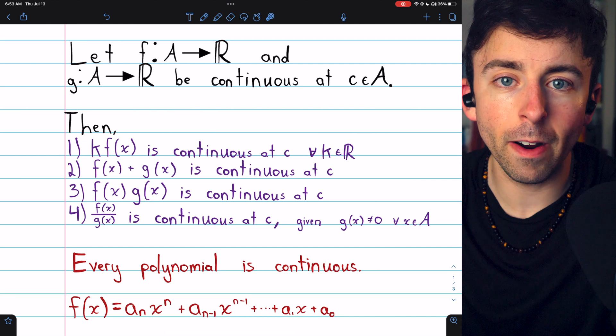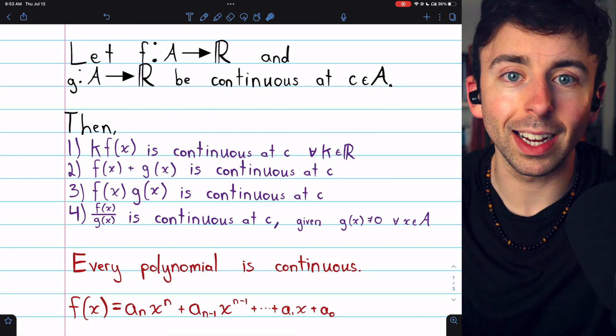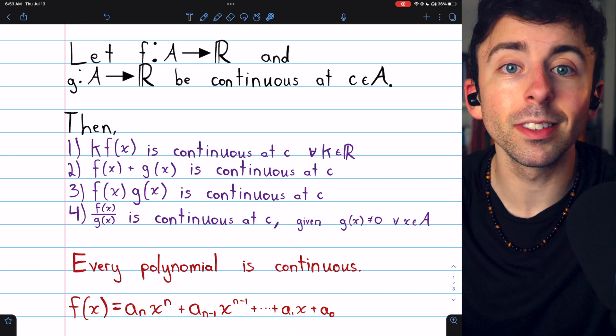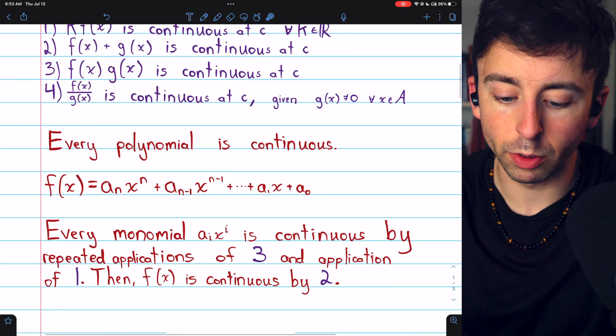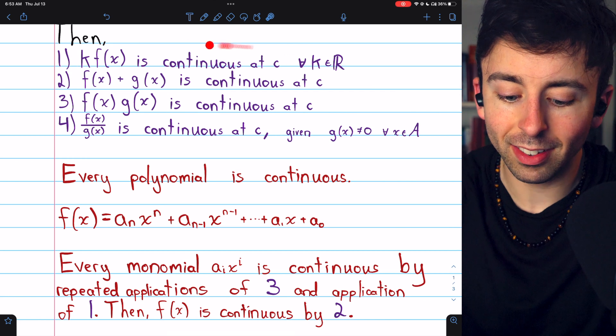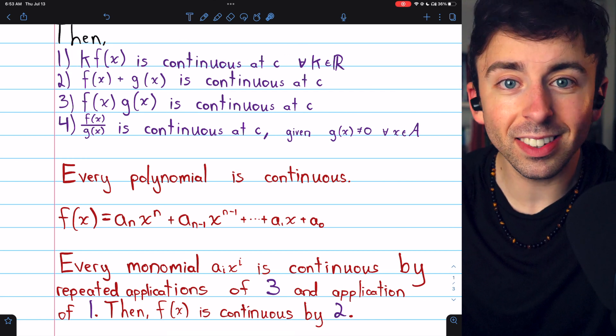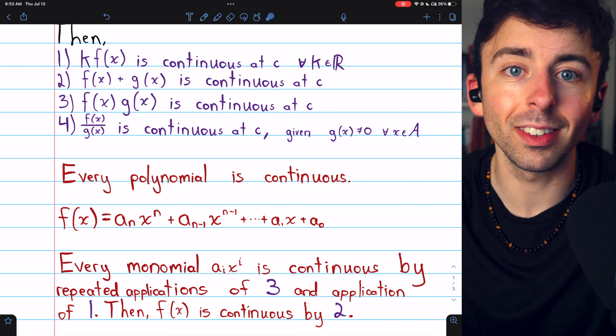x times x would give us x squared. Multiply by x again would be x cubed. And law three here tells us that all of those powers have to be continuous. And then an application of law one would guarantee us that multiplying that power of x by any real number still leaves us with a continuous expression.